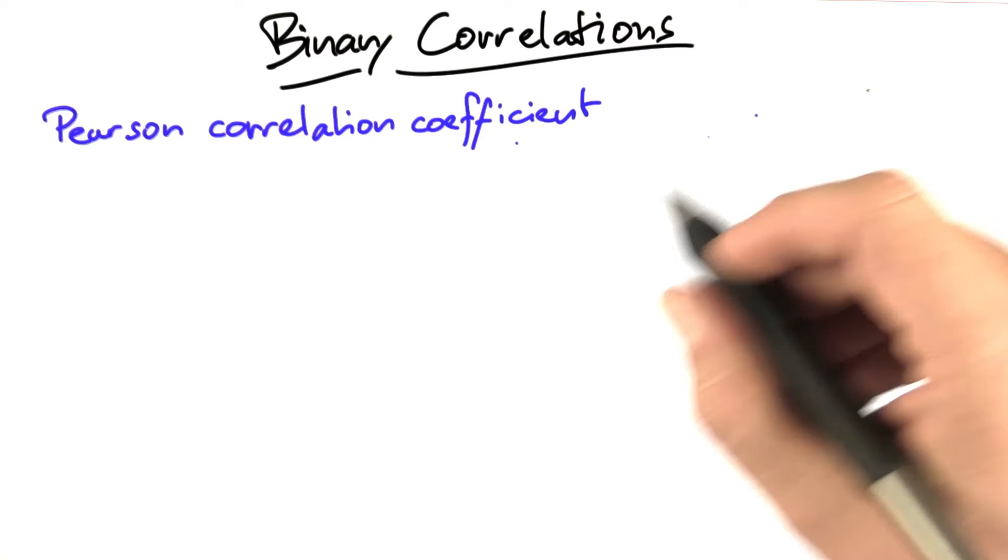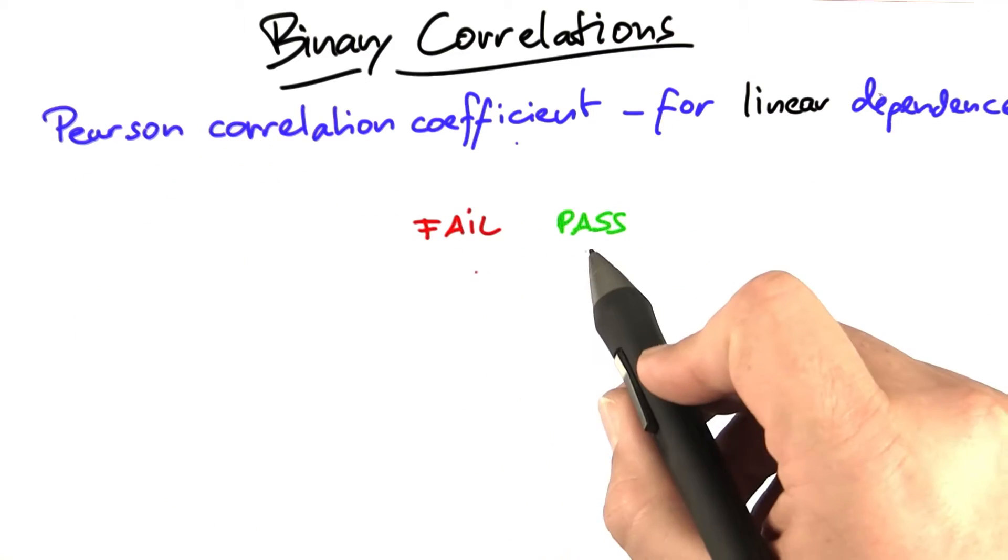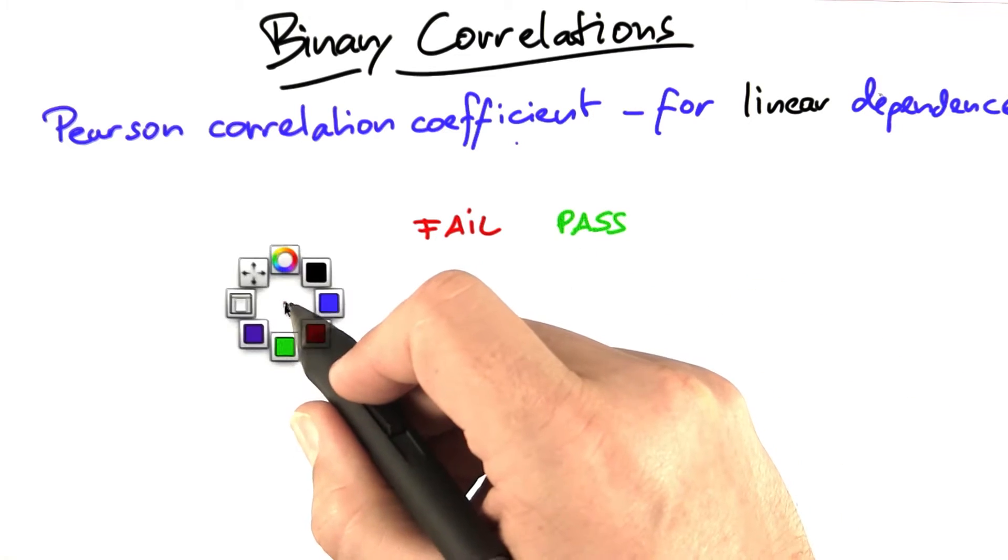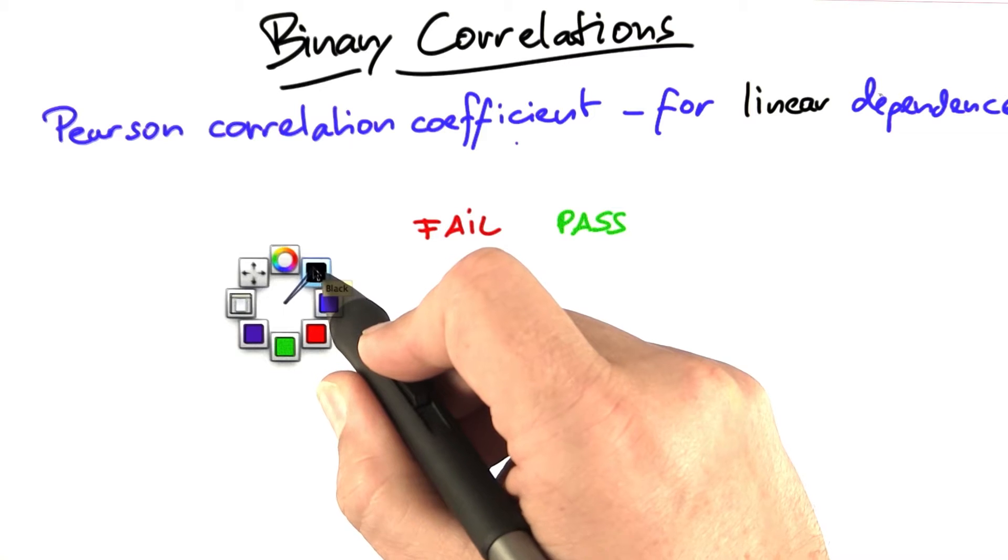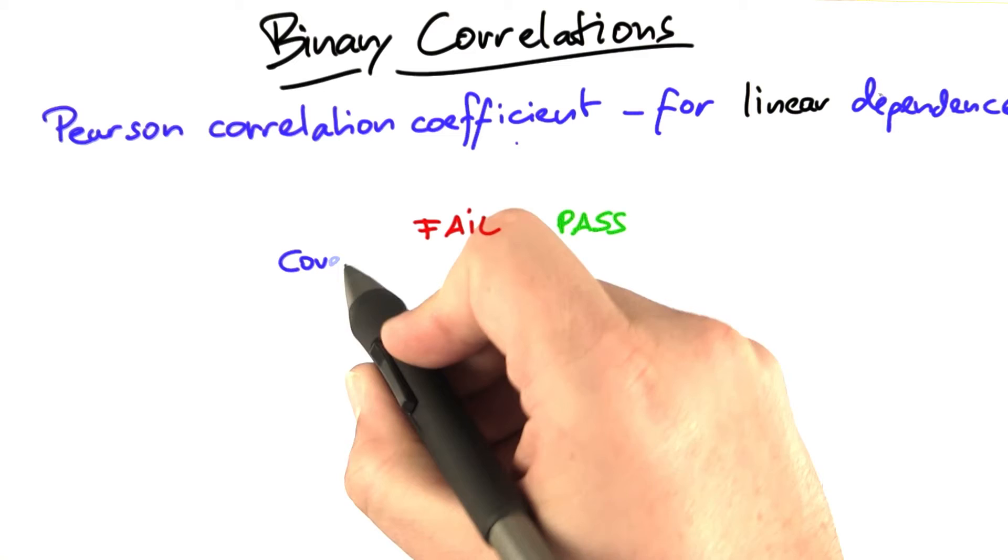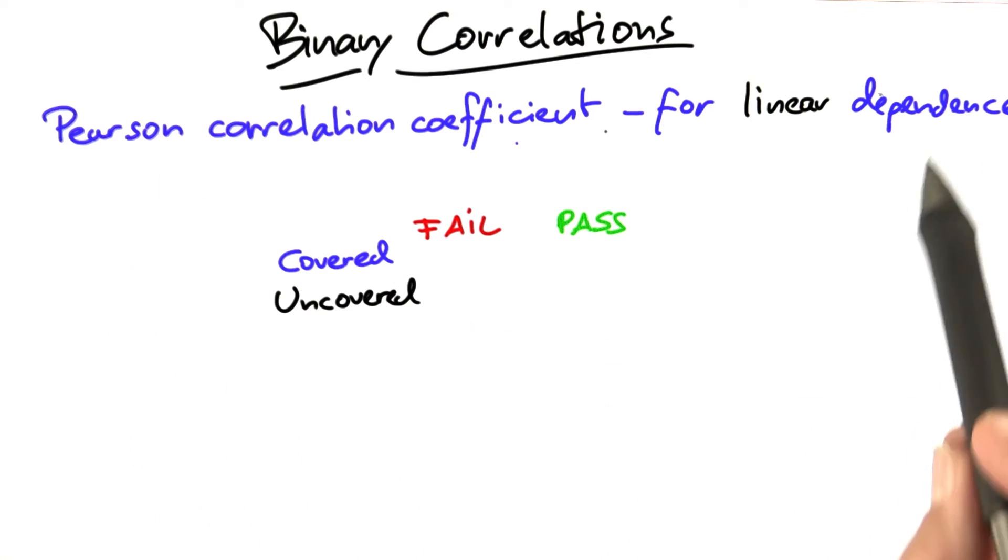What we want instead is a correlation between two binary values. On one side, we have the outcome of the run, either fail or pass. And then for each line, we know that it's either covered or uncovered. And we want to come up with a correlation between coverage on one side and outcome of the run on the other side. So the Pearson correlation coefficient is not appropriate for this.